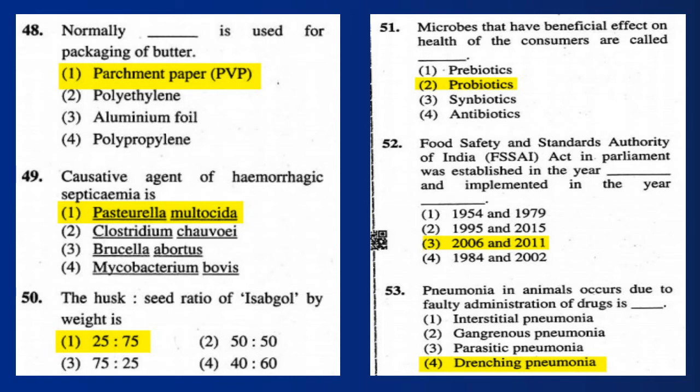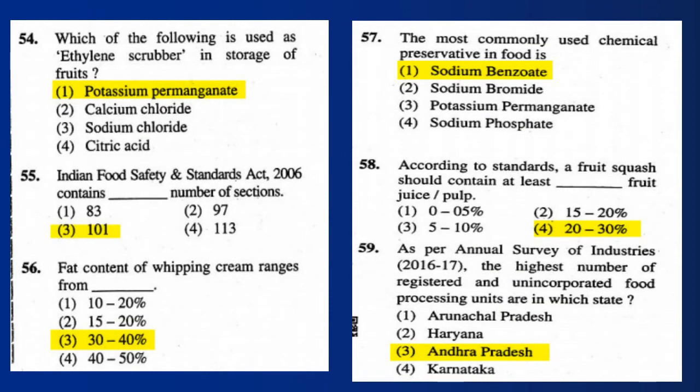Question 53: Pneumonia in animals that occurs due to faulty administration of drugs is called drenching pneumonia. Question 54: Which of the following is used as an ethylene scrubber in storage of fruits? Answer: potassium permanganate.